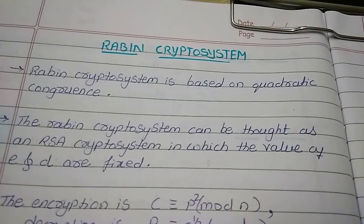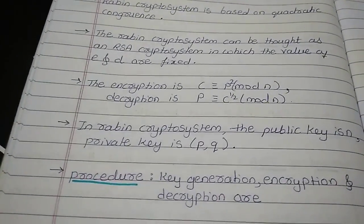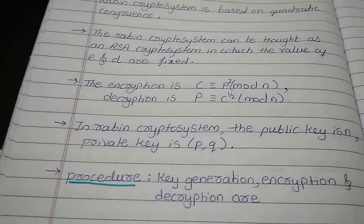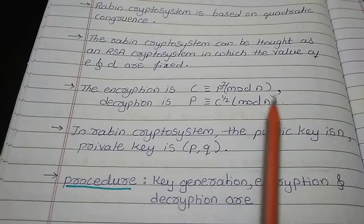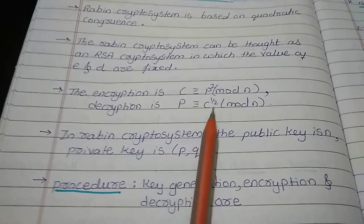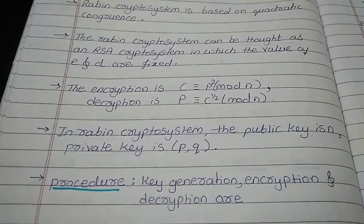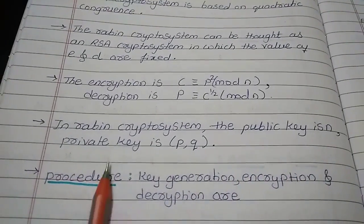But here the value of E and D are fixed. If you want to perform encryption by using Rabin cryptosystem, then you are going to use C is congruent to P square mod N. And for decryption purpose you are using P congruent to C to the power 1 by 2 mod N. Here remember that the public key is the value of N and private key is the value of P and Q.